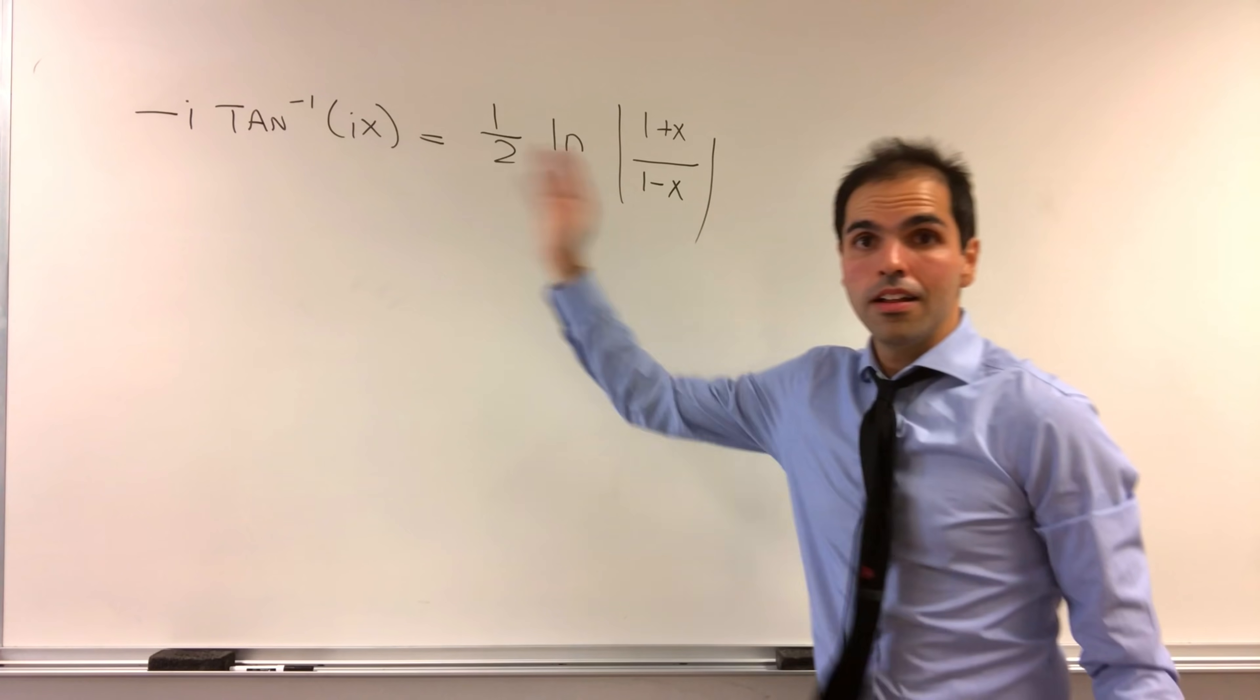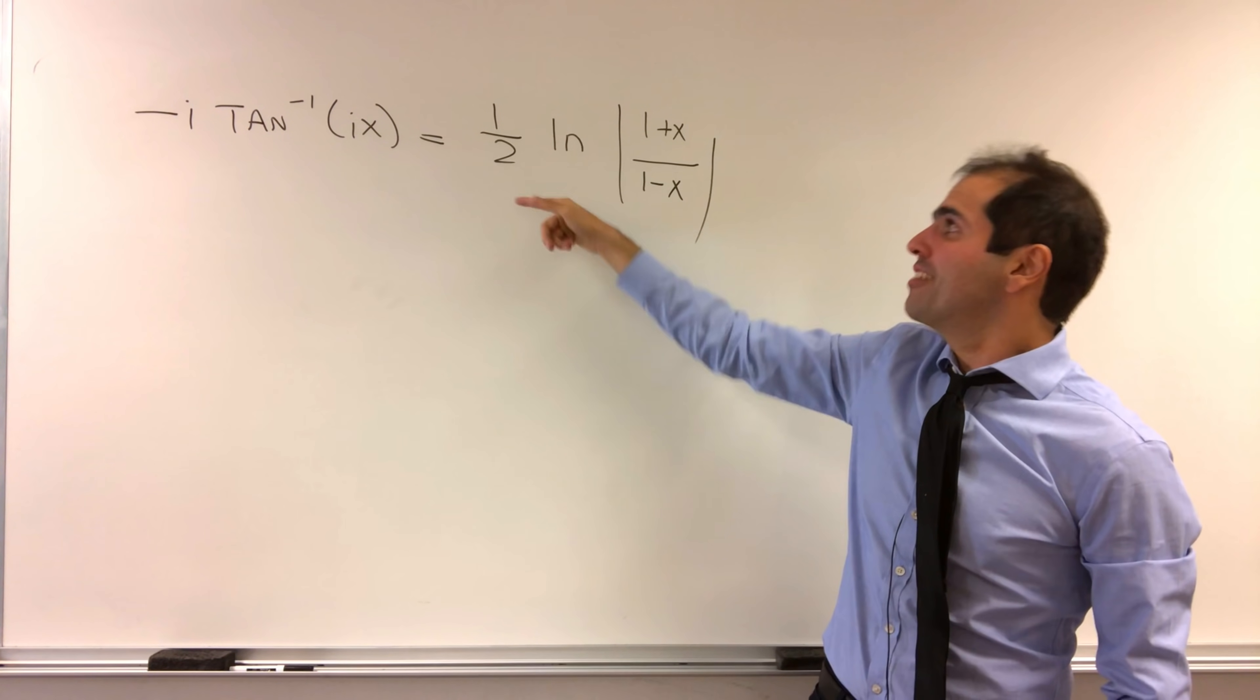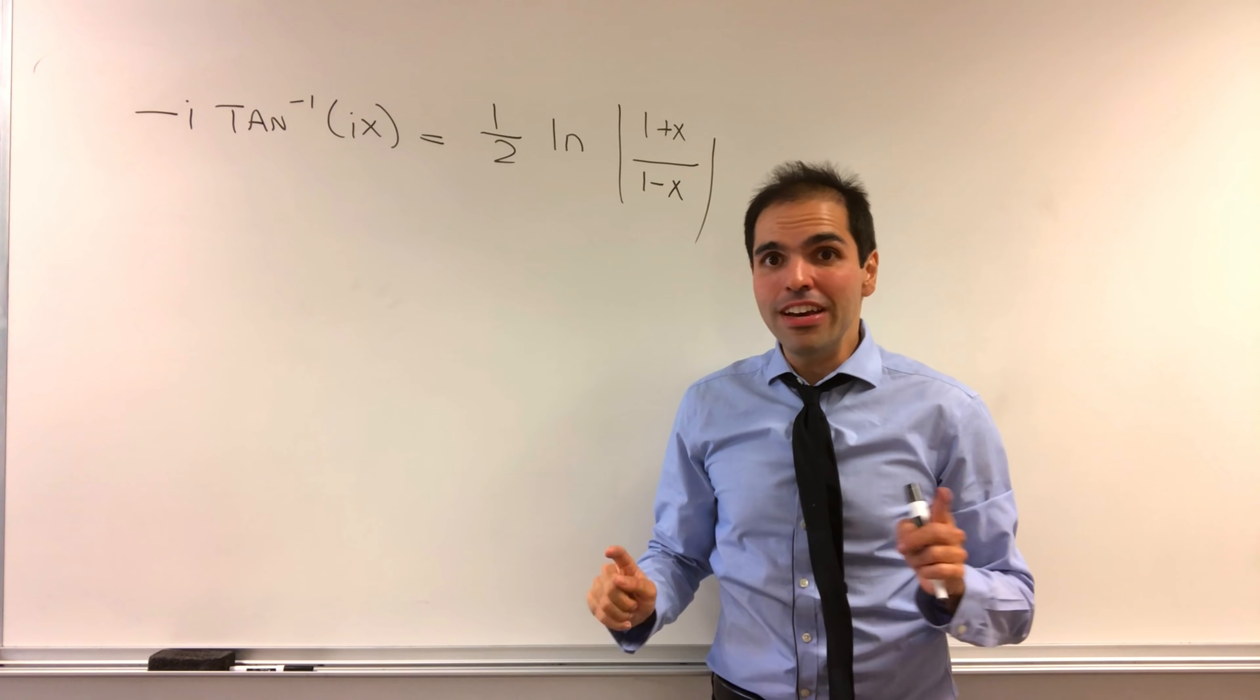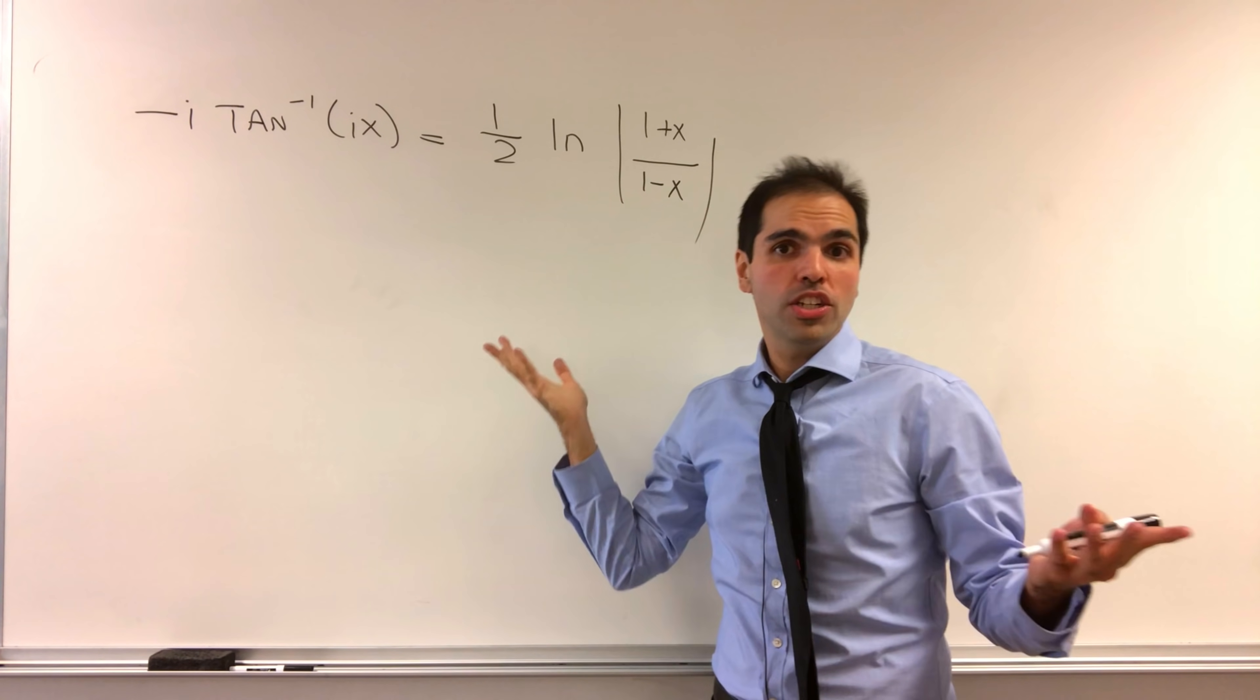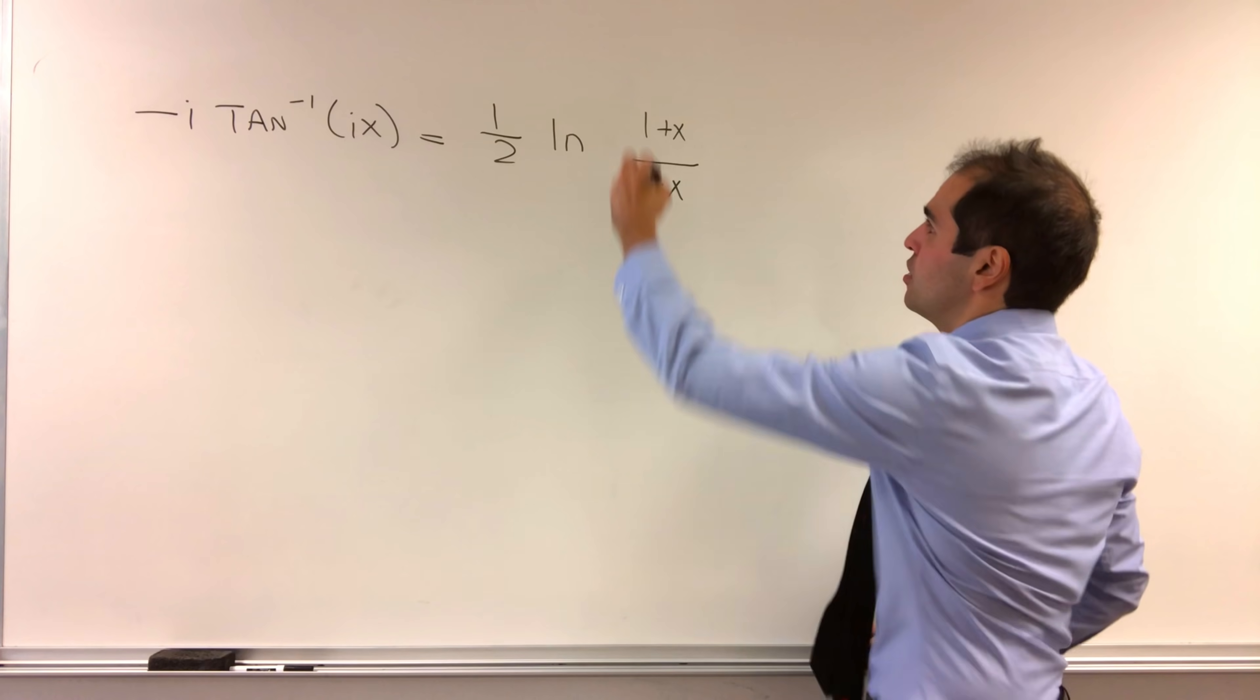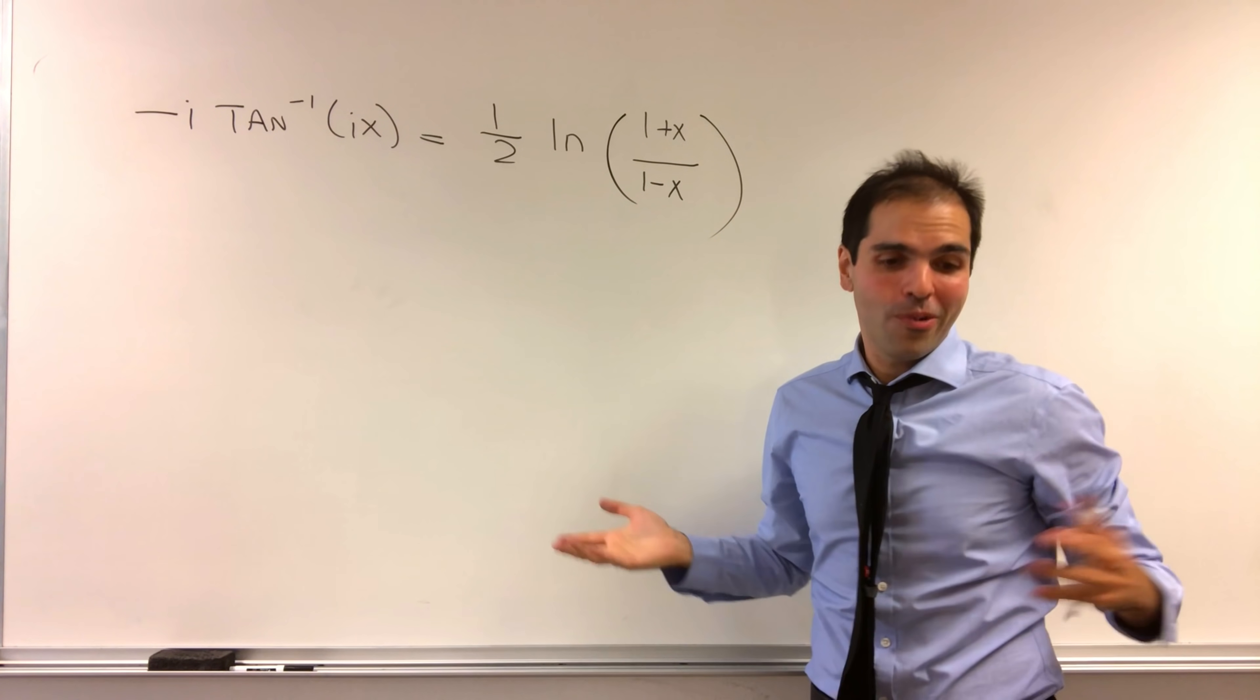Namely, minus i arctangent of ix equals 1 half ln of absolute value of 1 plus x over 1 minus x. But even better, if you extend this to complex numbers, you can check simply by differentiating that the same thing holds if you remove absolute values and just change it to parenthesis. And this will be very important in a second.